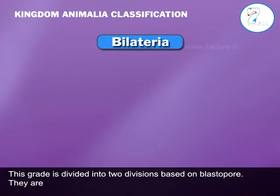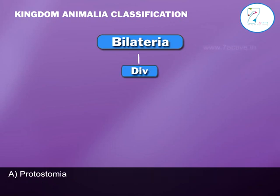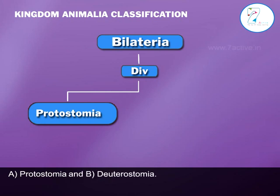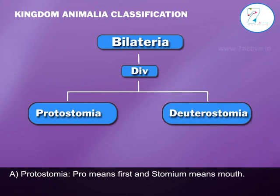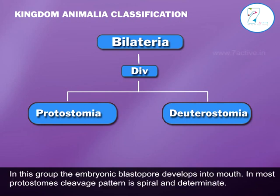This grade is divided into two divisions based on blastopore. They are: a. Protostomia and b. Deuterostomia. In Protostomia, 'pro' means first and 'stoma' means mouth. In this group, the embryonic blastopore develops into the mouth in most protostomes.